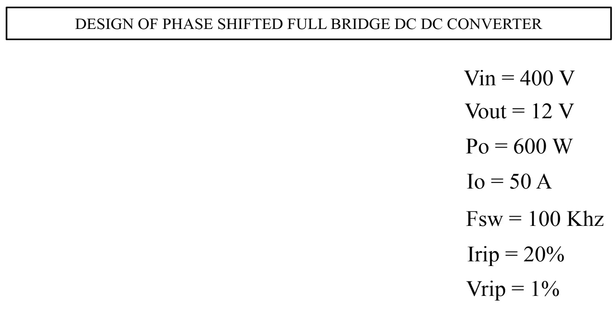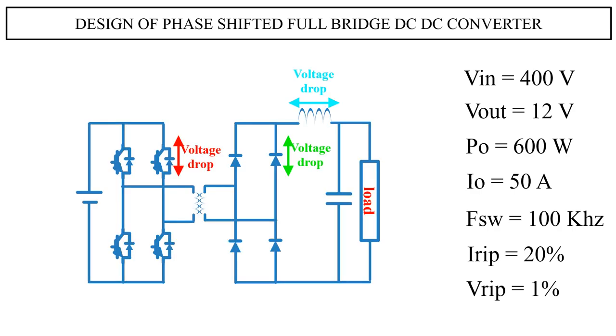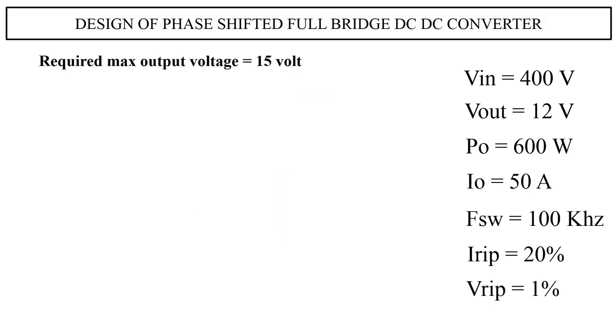First we need to find the turn ratio of the transformer. The actual output voltage of the converter is 12 volts. Since there are voltage drops across MOSFET, diode, transformer, and inductor, we need to generate a voltage which has to be more than 12. You can give a margin of 20 to 30 percent depending on your application. Here I am taking the required voltage as 15 volts. Therefore the turn ratio is given by output divided by input voltage, that is 15 divided by 400 volts, 0.0375.